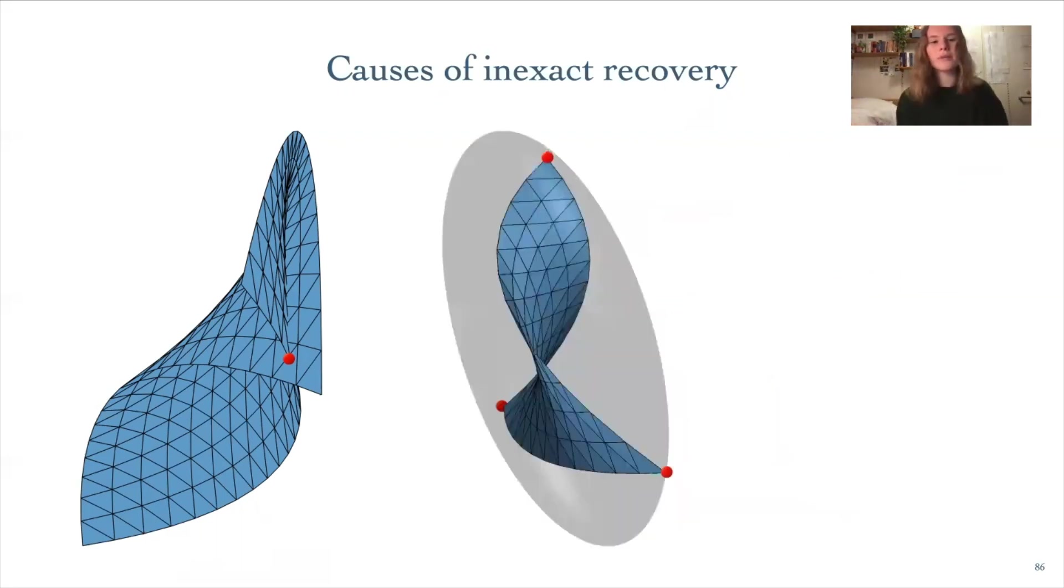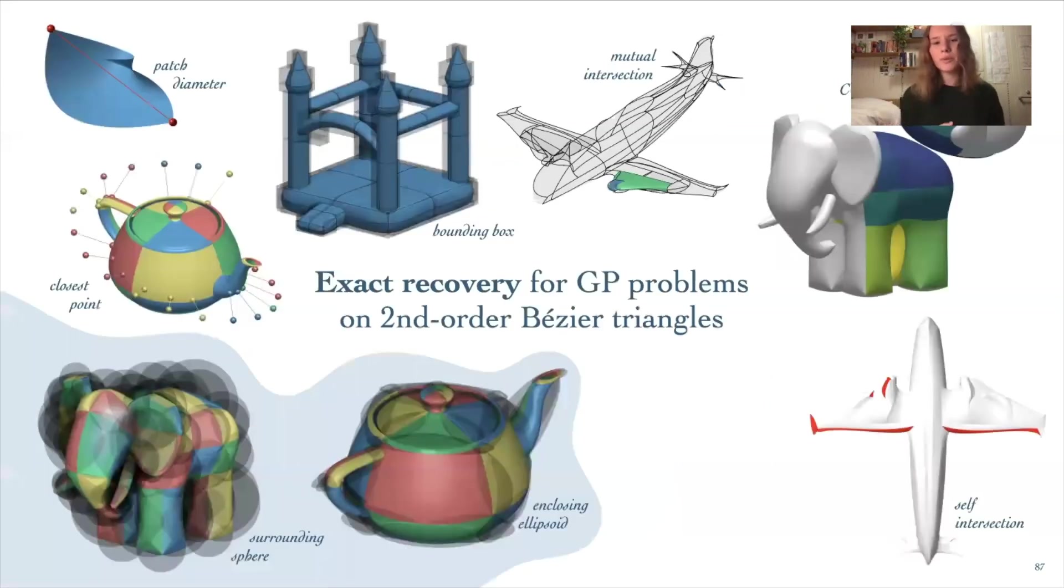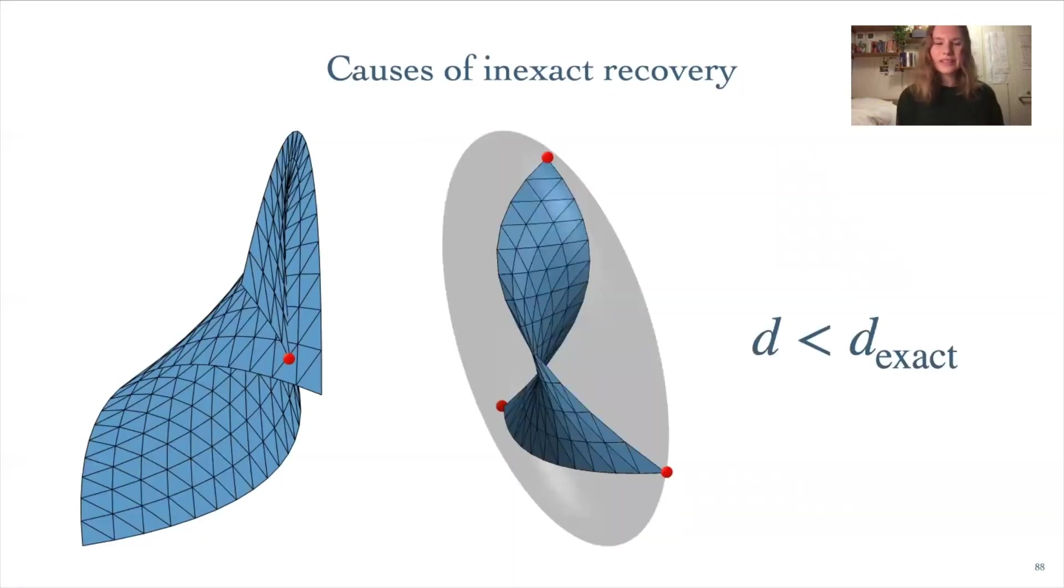There's also some problems where we just don't expect to have a single optimal point, like the ellipsoid problem. Here, every point touching the boundary of the ellipsoid is optimal, so we definitely shouldn't expect to see a single delta function here. I've circled in blue the problems where we can't expect exact recovery for that reason.